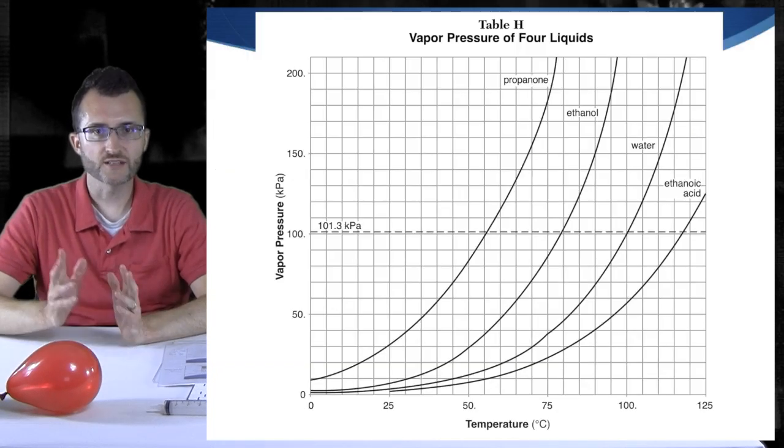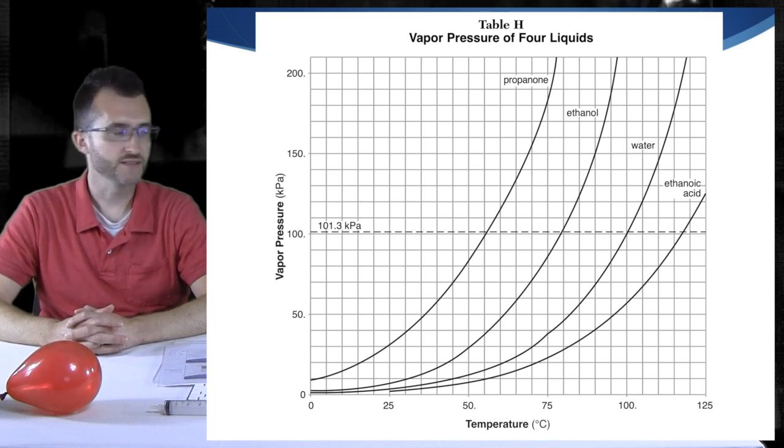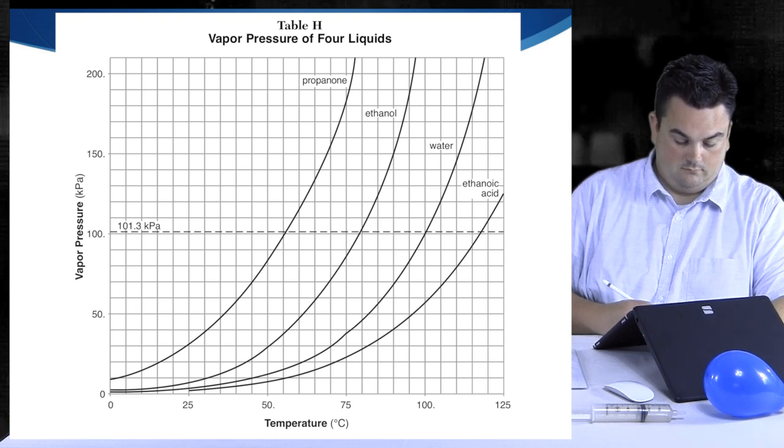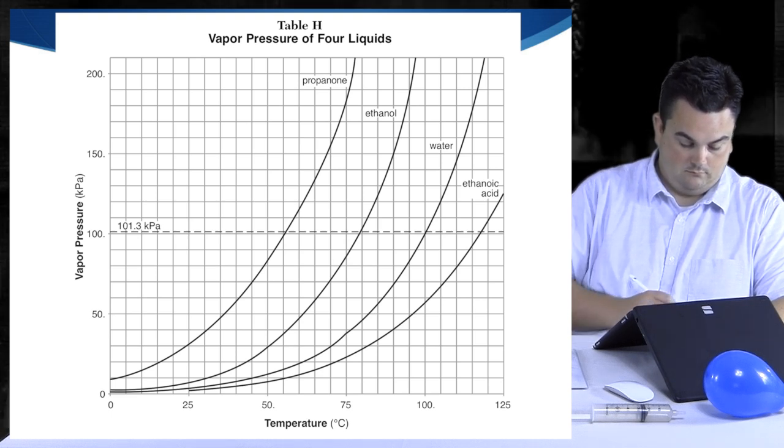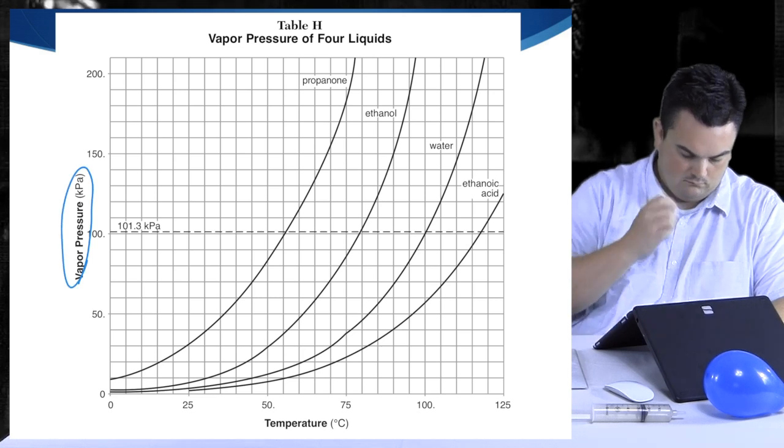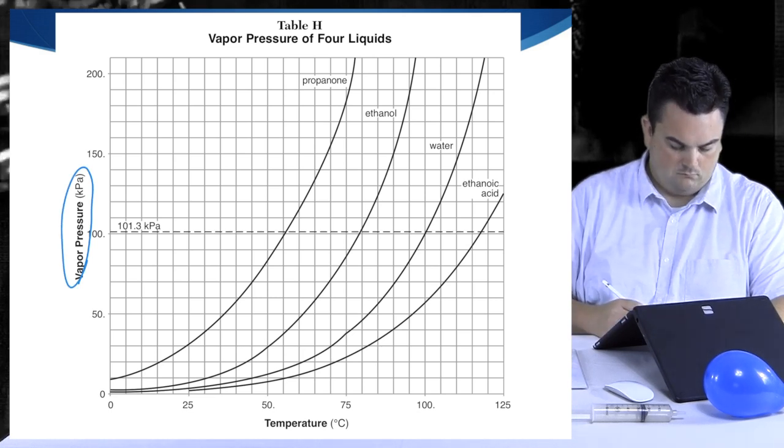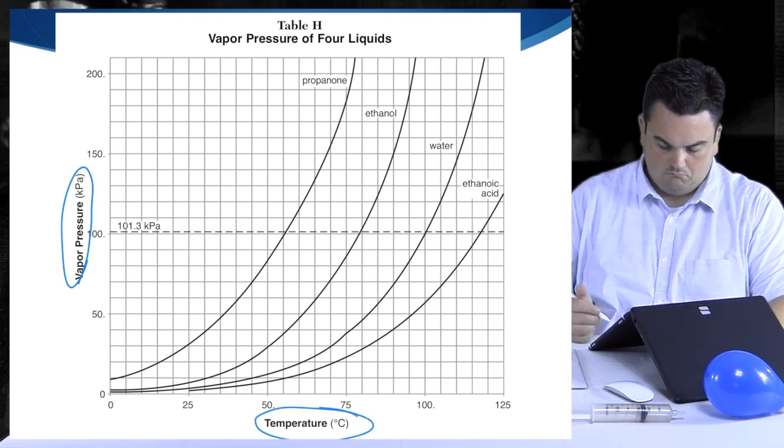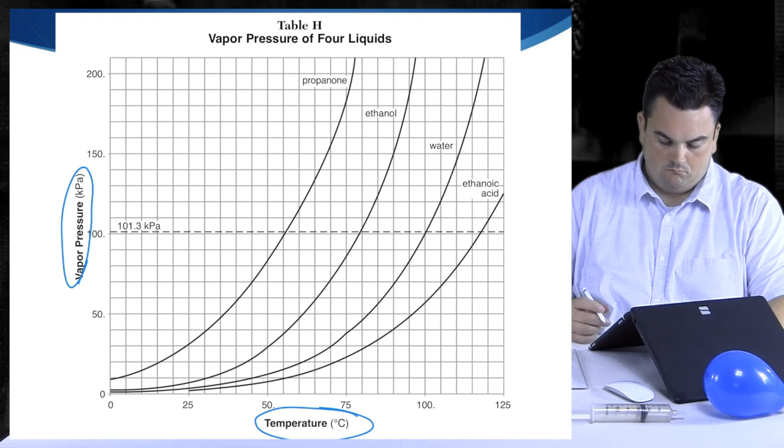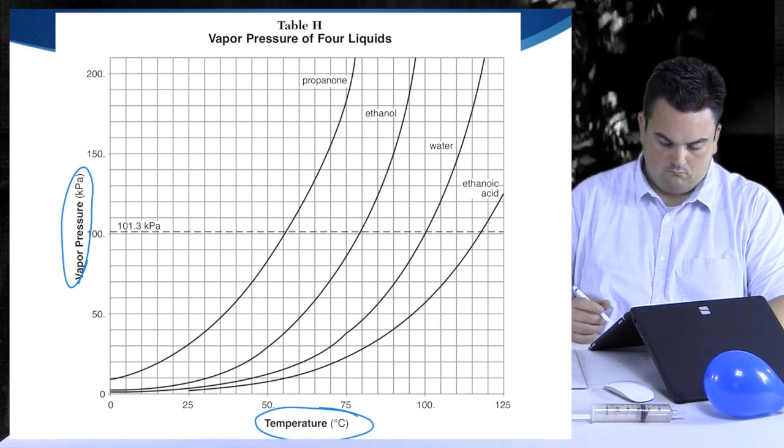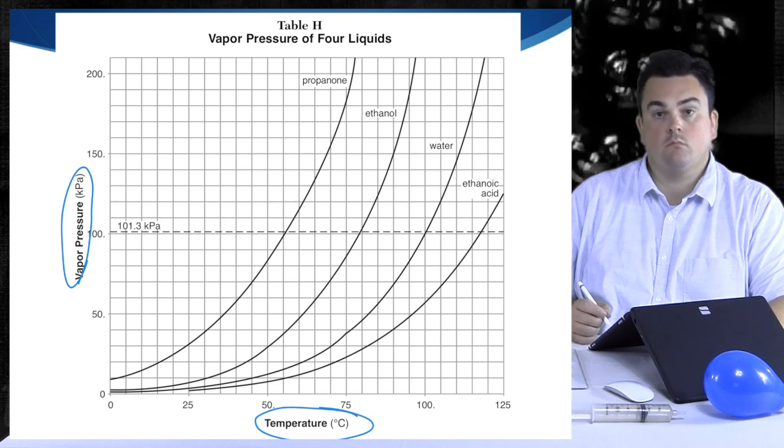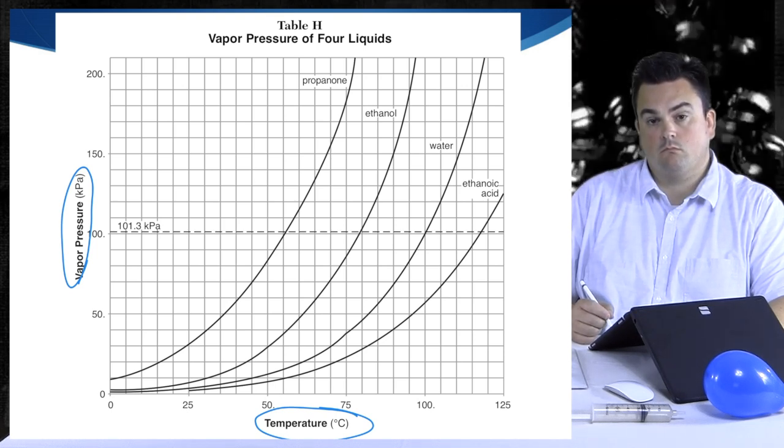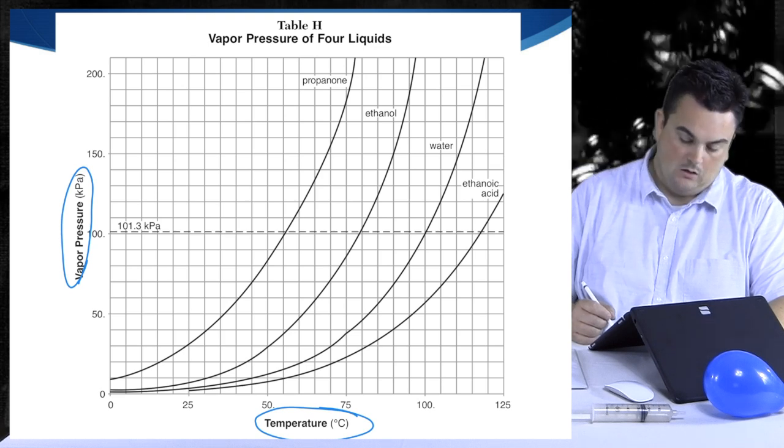All right, we're going to take a closer look at Table H, the vapor pressure of four liquids. You ready, Fu? Let's do it. All right, great. Let's take a look at the axes first. We have on the y-axis vapor pressure in kPa. Just to reiterate, the scale goes by ten, so be careful reading it. On the x-axis, we have temperature in degrees Celsius. In contrast, this axis goes by five. So we can pick a temperature, and we can note the vapor pressure of any of these liquids. Let's just talk about a general trend, Fu. As the temperature increases, what do you know about the vapor pressures of these four liquids?